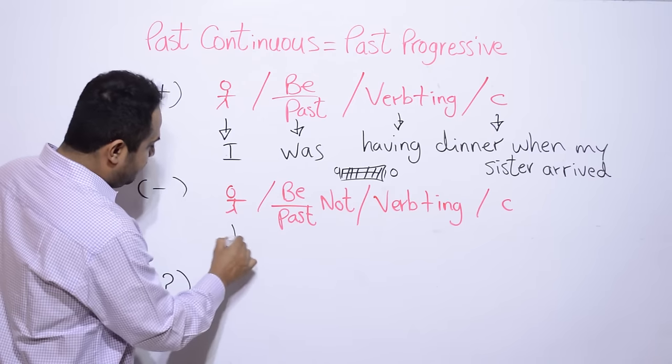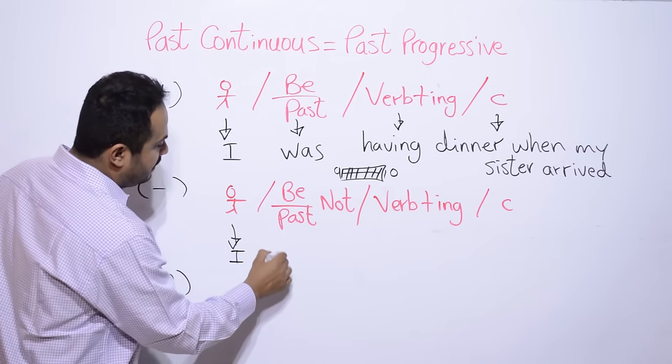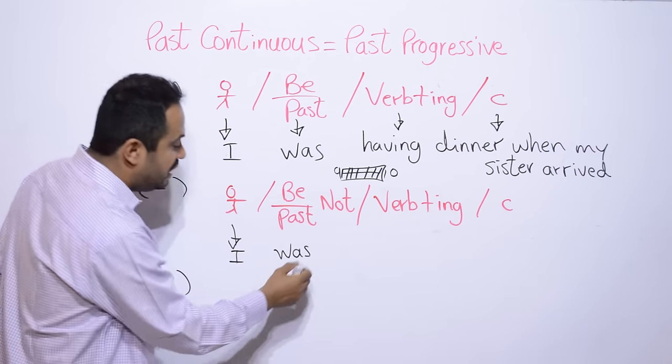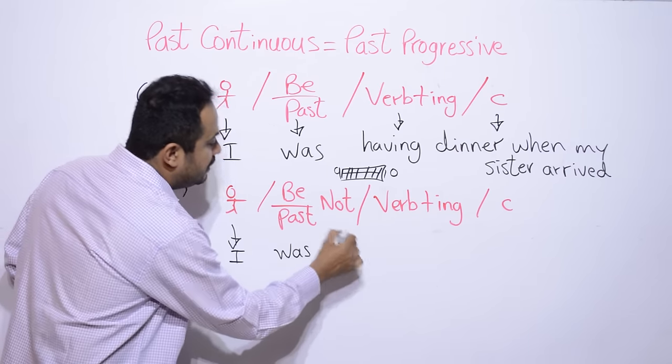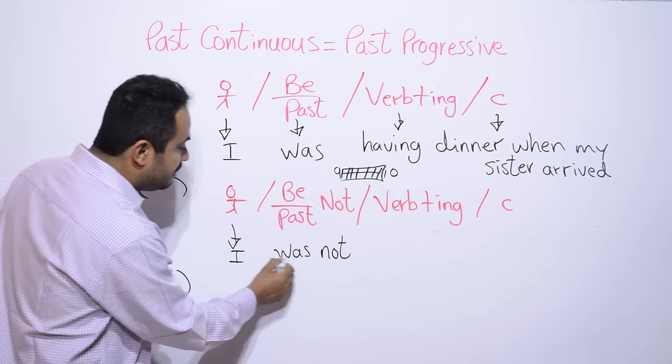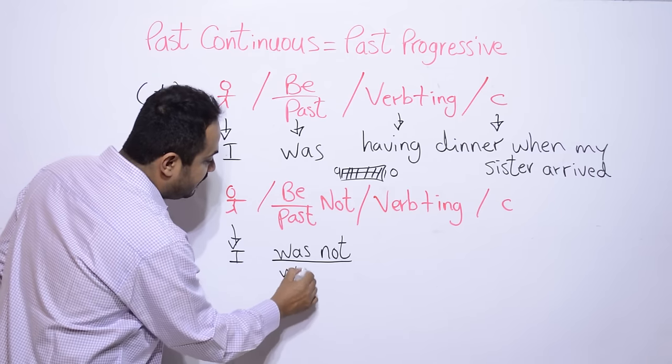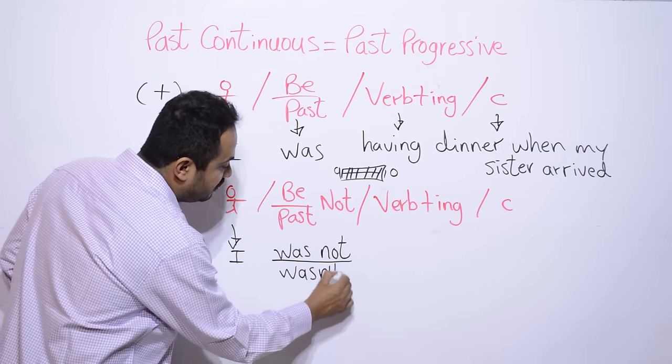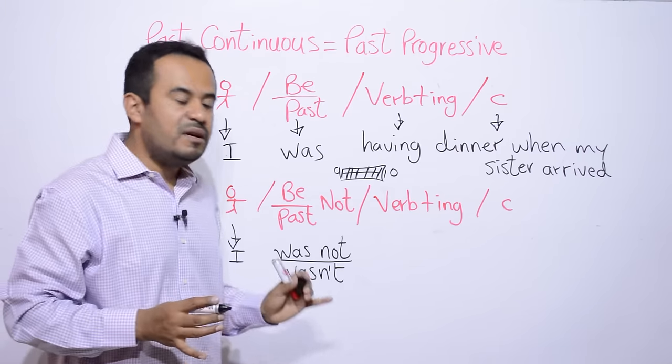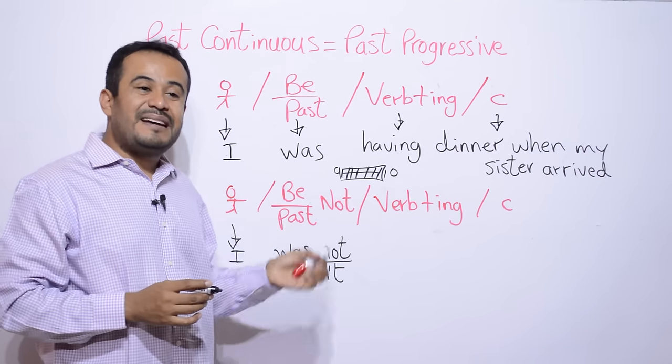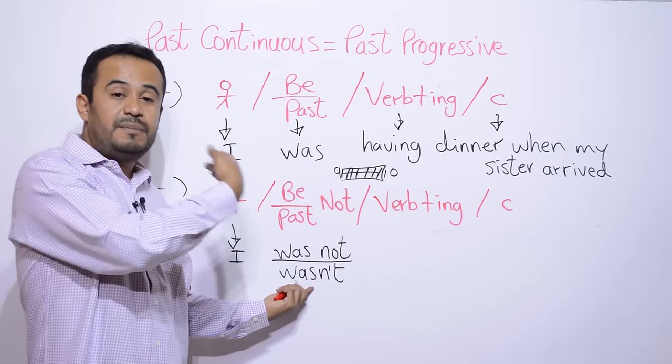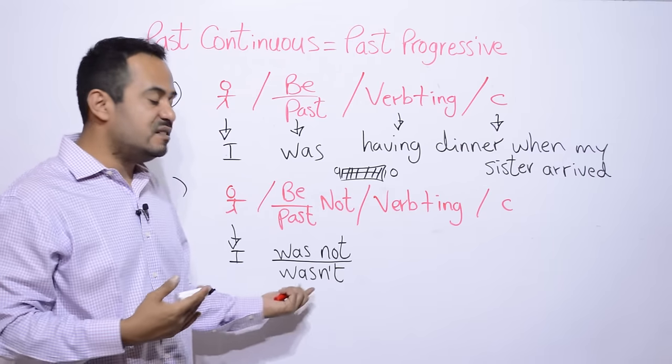Y esto nos quedaría de la siguiente forma. Nos quedaría, I was. Es verbo to be en pasado más not. I was not. Podemos escribir así. Podemos dejarlo así. I was not. O también podríamos dejarlo de la forma contraída, que es wasn't. I wasn't, I was not, es lo mismo. Pero la forma más formal, la manera más formal es was not. Aunque para simplificarlo, podríamos dejarlo como wasn't.